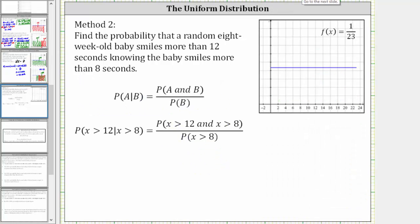Let's also find this probability a second way, using the conditional probability formula. The probability of A given B is equal to the probability of A and B divided by the probability of B. So again, we're looking for the probability that x is greater than 12, given x is greater than 8, which equals the probability that x is greater than 12 and x is greater than 8, divided by the probability that x is greater than 8.